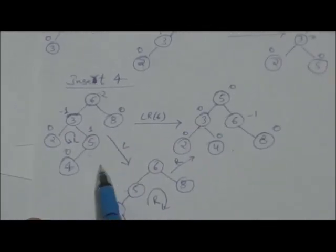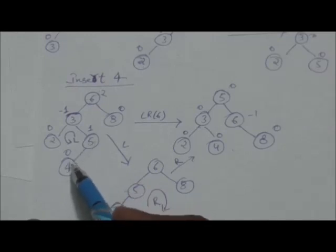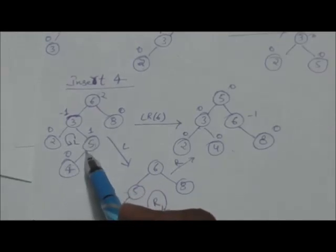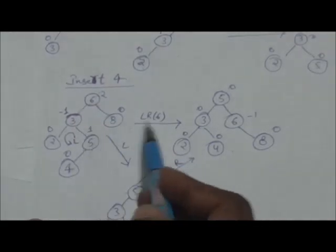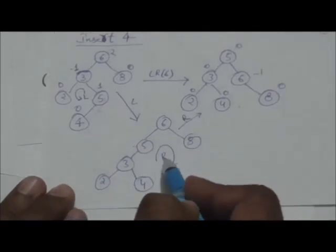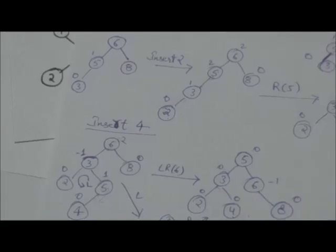Next we insert key 4. After inserting 4, this tree is unbalanced. Key 4 is inserted into the right subtree of the left child of the root, so to balance it we need to perform a double left-right rotation. First we perform a single left rotation on the left subtree of the root, and then a single right rotation. After that we get this balanced tree.